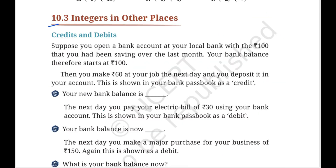We came to know how to use integer numbers in terms of a lift going up and down. Apart from that, we will use integers in other contexts. First, Credits and Debits. If you want to use a bank account, you can do a transaction. When you deposit an amount, it is a plus — that is, positive. If you withdraw, the amount is minus — that is, negative.